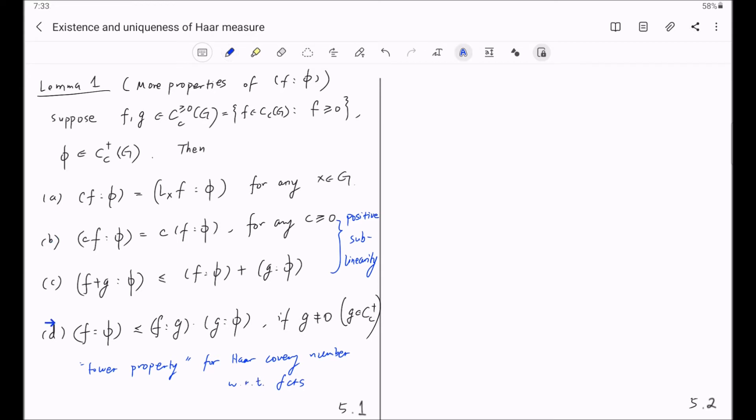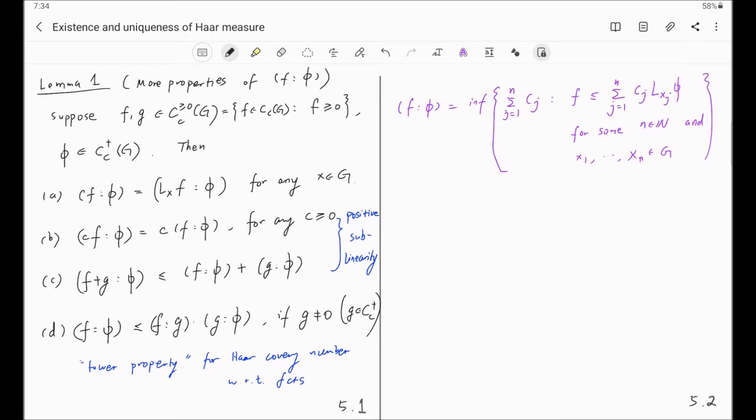All those four properties are very easy to prove, so you might want to pause this video and do it yourself. But I will give you the answer anyway. So now pause this video and come back if you get stuck. Okay. So for convenience, let me always grab this definition for F column V.